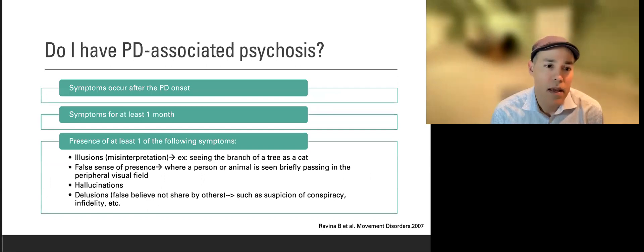How we can make the diagnosis: Number one, you need to have the diagnosis of Parkinson disease. That's the first step. Number two, you need to have symptoms for at least one month. Number three, you need to have one of the following symptoms.